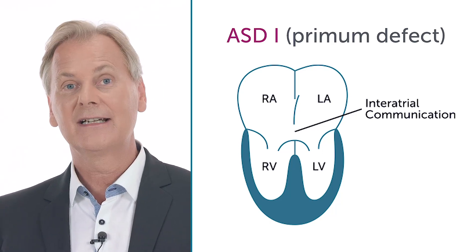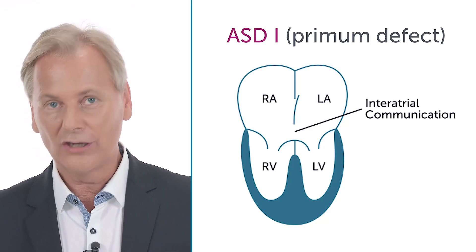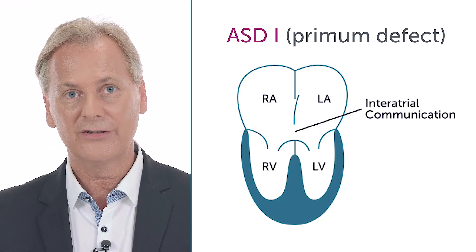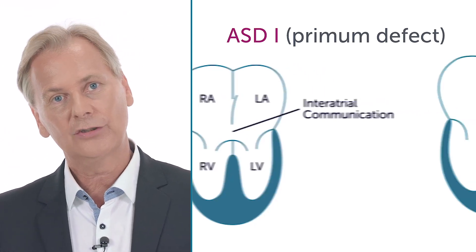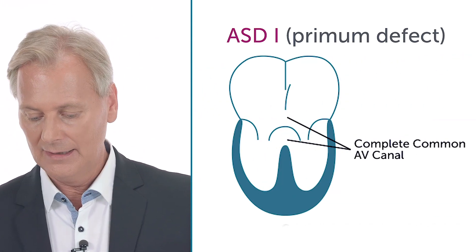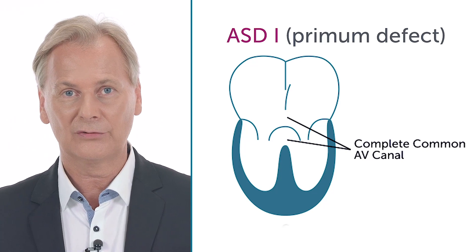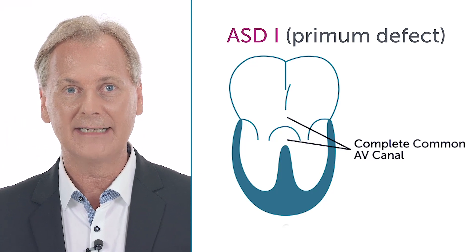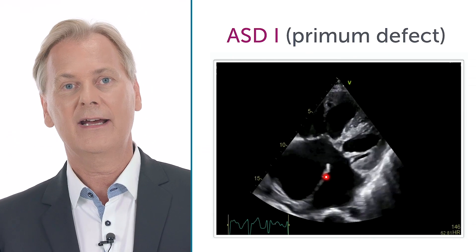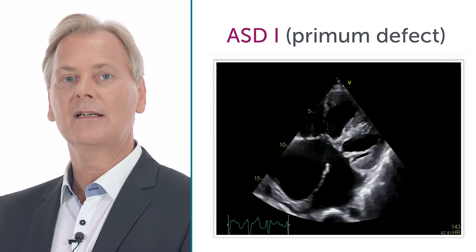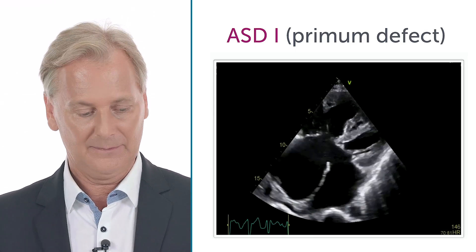It's actually an AV canal defect. We also call it a partial AV canal defect because only an atrial septal defect is present. In a so-called complete AV canal, there would also be a defect in the interventricular septum — so you'd have a VSD and an ASD. This is only an ASD, that's why it's a partial AV canal defect, or we also call it a primum atrial septal defect.